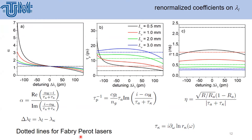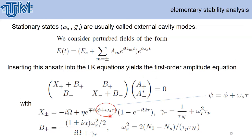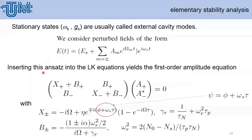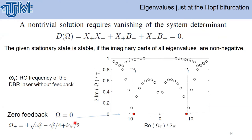We look for the stationary states — the external cavity modes. We consider perturbations and insert an ansatz into the Lang-Kobayashi equation, leading to amplitude equations. Introducing a new phase that includes the external phase and phase changes due to reflection, we look for non-trivial solutions requiring that the determinant of the system matrix vanishes. For zero detuning, we obtain two stationary states.